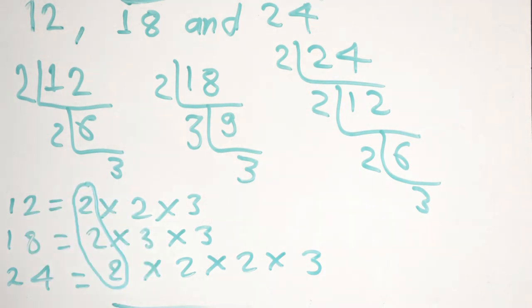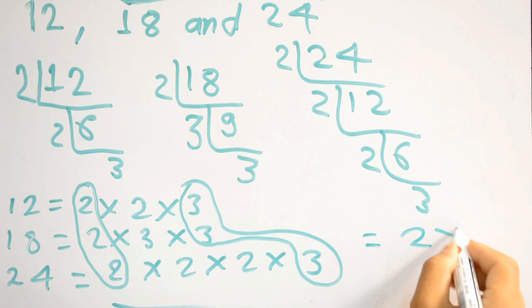This 2 is common. This 3 is common. Do we have any common numbers left? The common numbers are 2 times 3, which is 6. So 6 is the highest common factor of 12, 18, and 24.